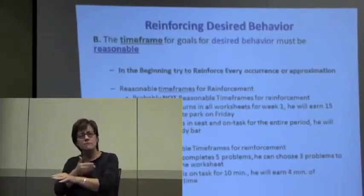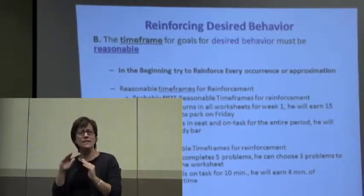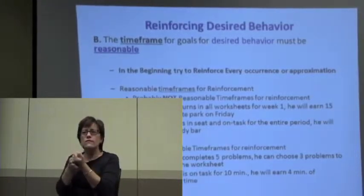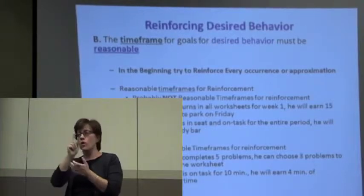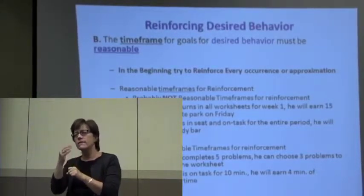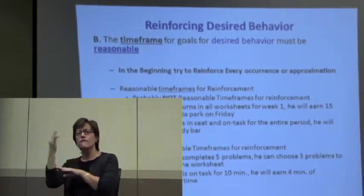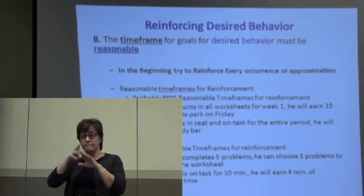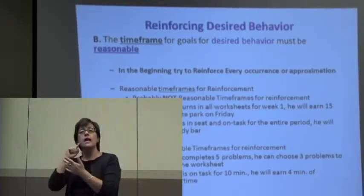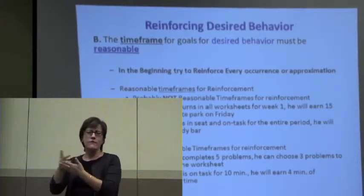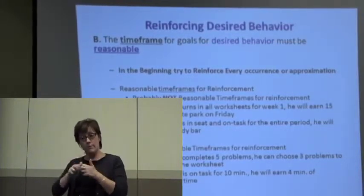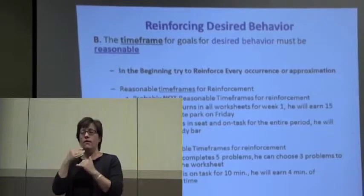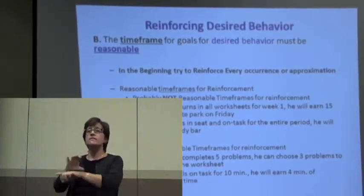Be reasonable with goals, expectations, and timeframes. It's probably not a reasonable timeframe if the student turns in all worksheets for one week to earn 15 minutes at the skate park on Friday, or stays on task the entire period to earn a candy bar — that's too long and sets the student up to fail. More reasonable: complete five problems, choose three to cross off the worksheet. On task for 10 minutes, earn four minutes of computer time.